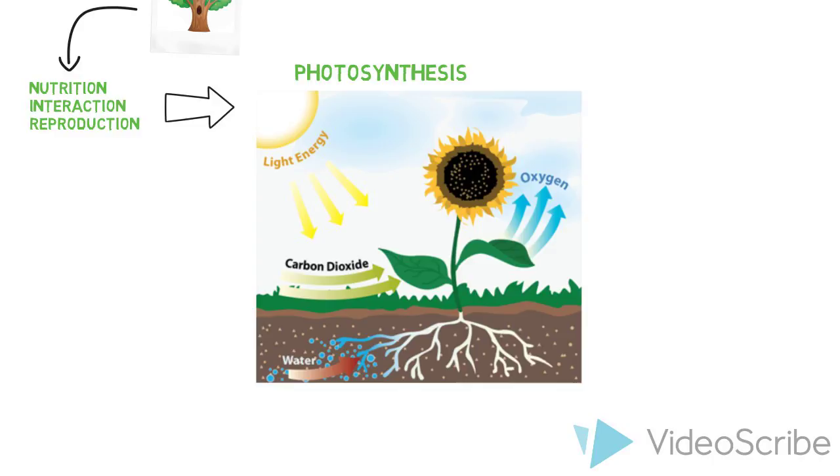The roots absorb water and minerals from the soil. Then the water and minerals travel up the stem to the leaves. The leaves absorb carbon dioxide from the air through small holes.